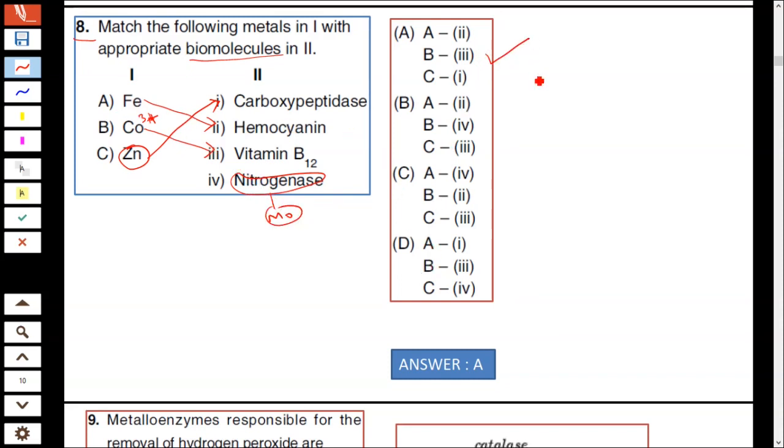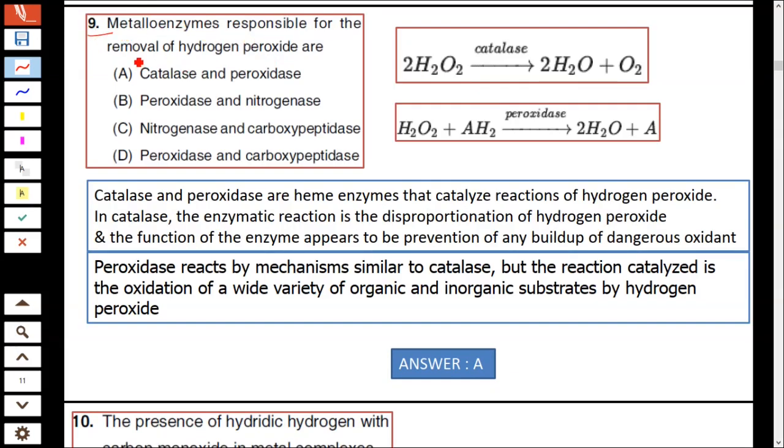Question number 9: Metalloenzymes responsible for the removal of hydrogen peroxide H₂O₂ are catalase and peroxidase. Catalase and peroxidase, both enzymes were responsible for the removal of hydrogen peroxide. Hydrogen peroxide was converted by catalase enzyme into water and oxygen. Peroxidase converts hydrogen peroxide into water. Nitrogenase was responsible for nitrogen fixation. Carboxypeptidase was used to break the peptide bond. Catalase and peroxidase are heme enzymes that catalyze the reaction of hydrogen peroxide.